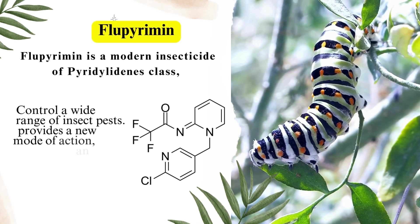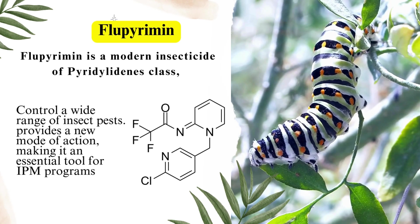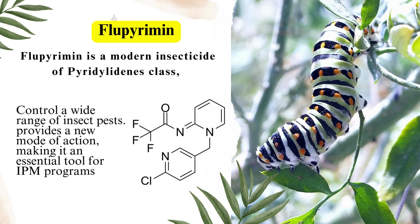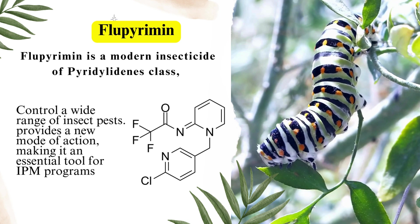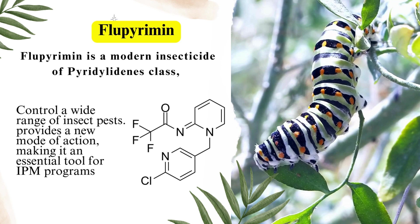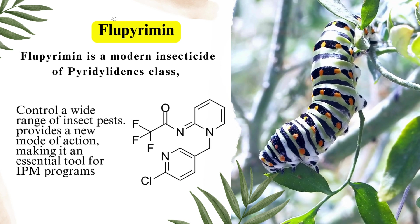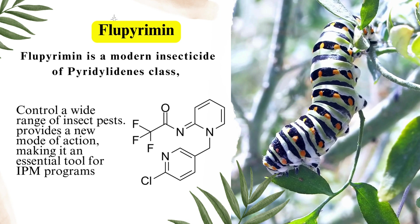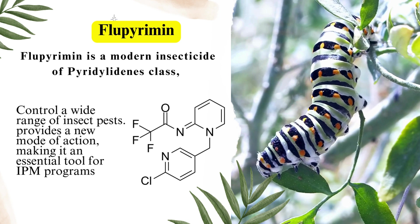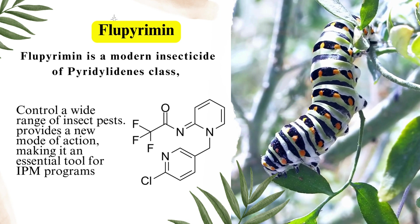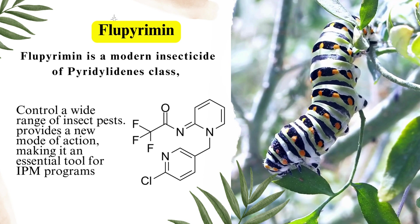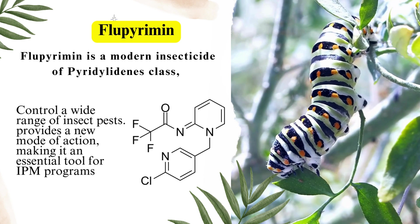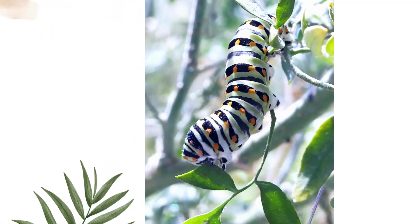Chemistry: Flupyrimine is a modern insecticide from the Pyridylidine chemical class, designed to control a wide range of insect pests. Its unique chemistry provides a new mode of action, making it an essential tool for integrated pest management (IPM) programs.